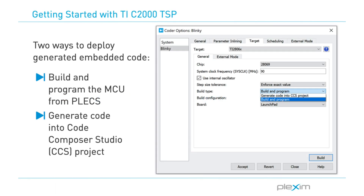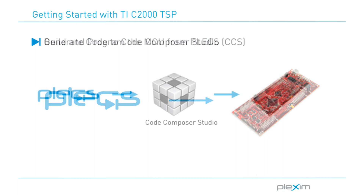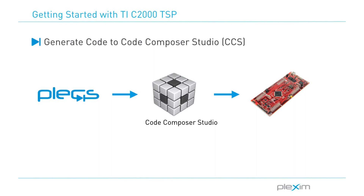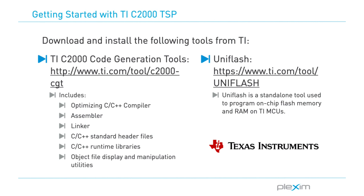There are two ways to deploy generated embedded code onto a TIC2000 microcontroller. The first is to build and program the MCU from Plex. The second method is to generate code into a Code Composer Studio or CCS project to then build and program from there. To deploy the MCU directly from Plex, two standalone tools available from TI need to be installed.